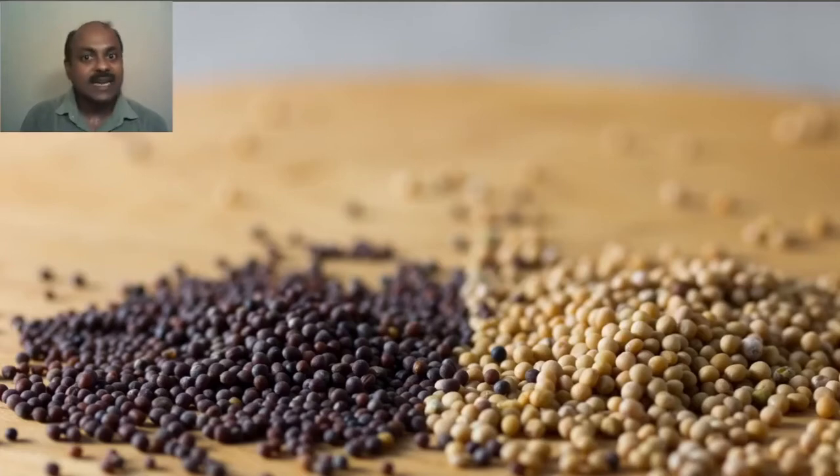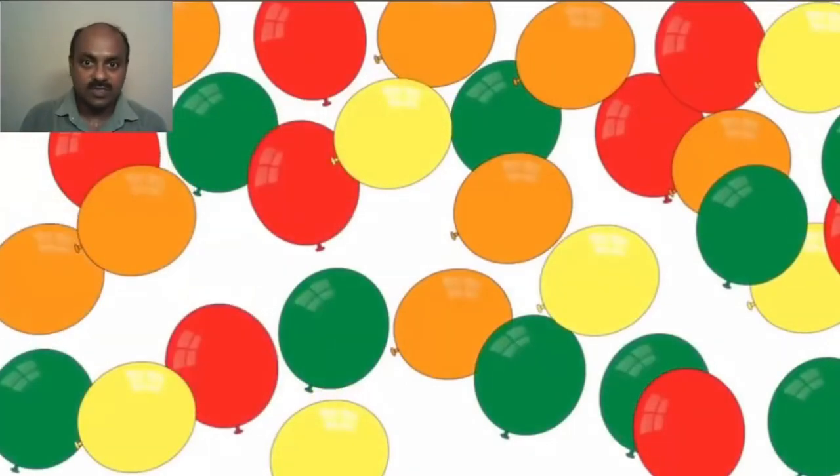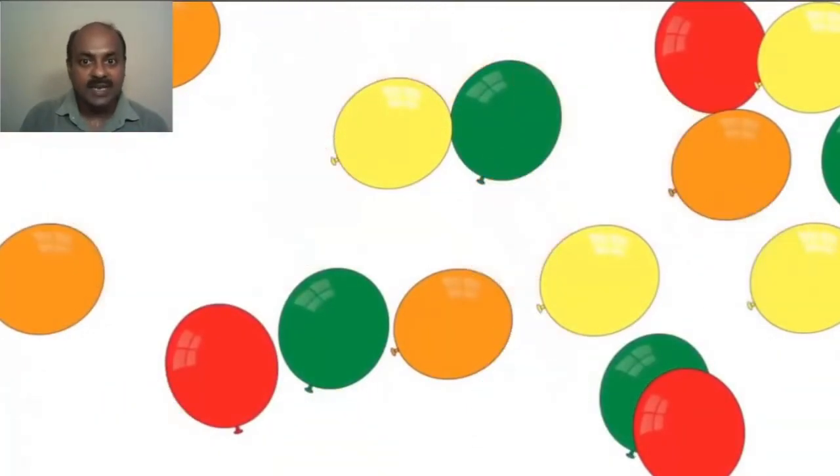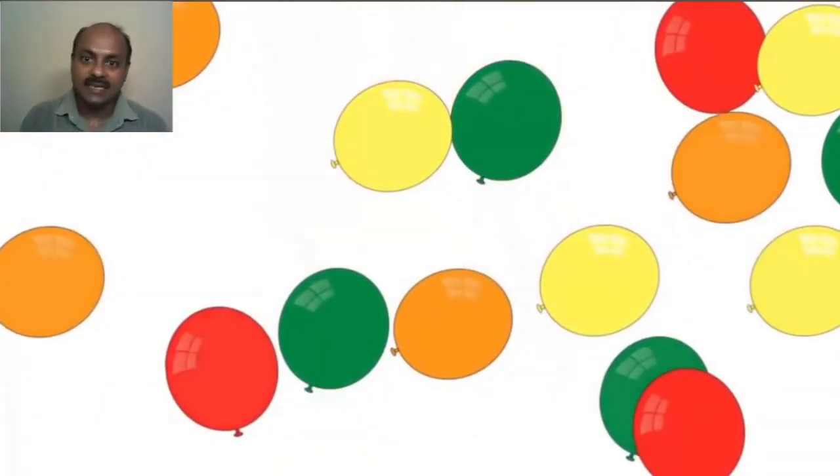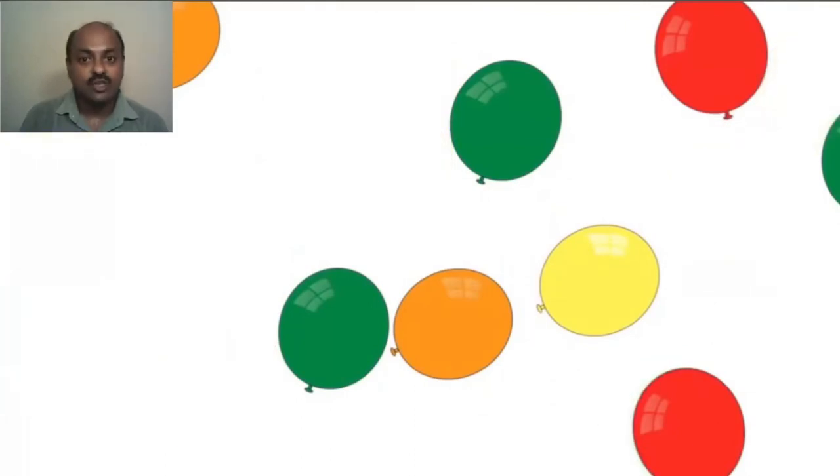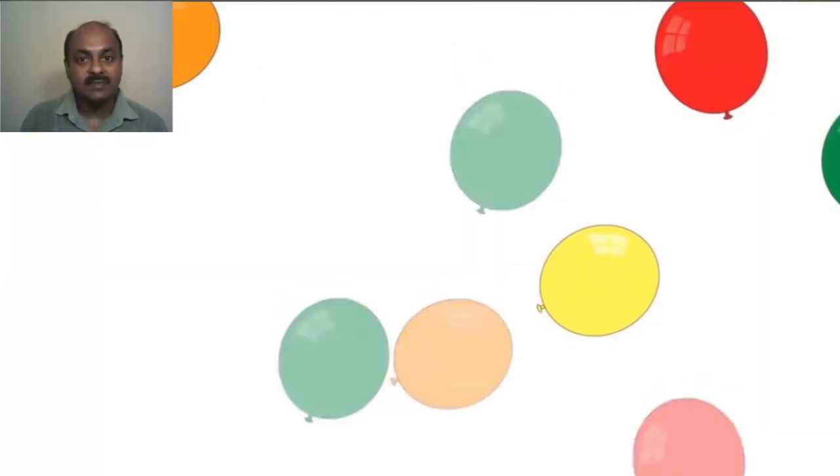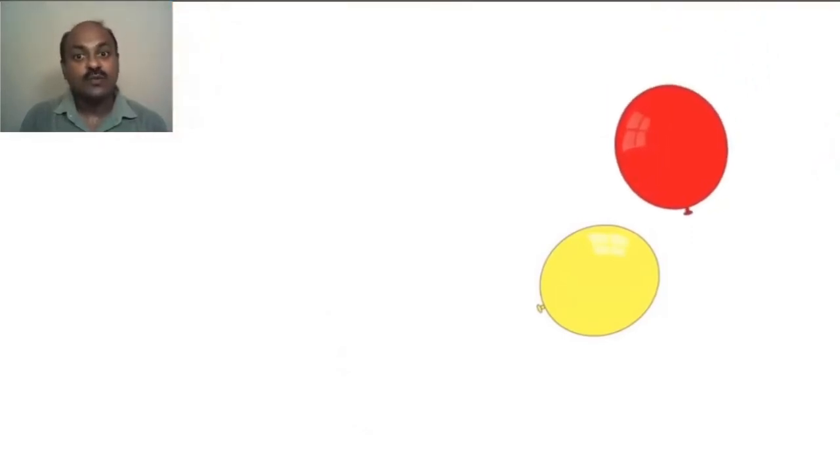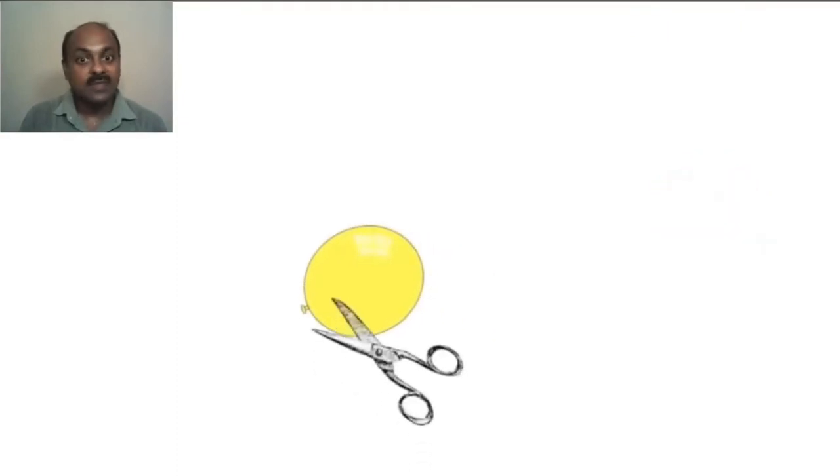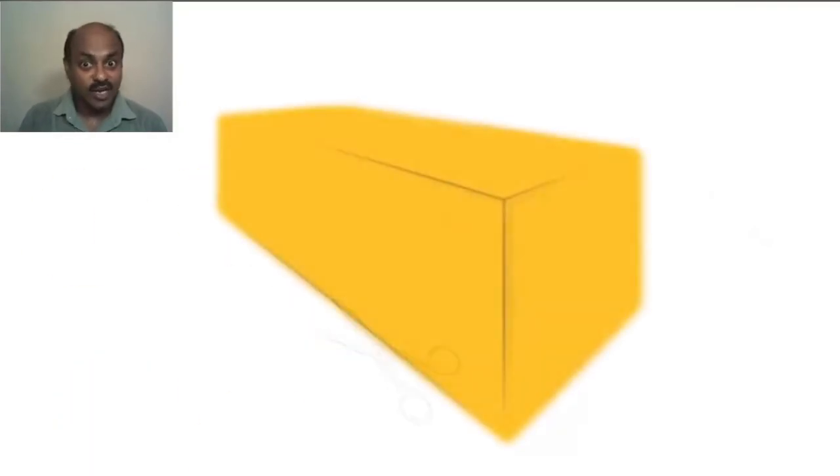To understand atoms and matter let us take an example of a room filled with balloons. The room is the object and the balloons are the atoms in it. If you decide to chop away half the number of balloons for a very long time you will eventually be left with just one balloon. If you decide to cut the last balloon will it function as a balloon? No.